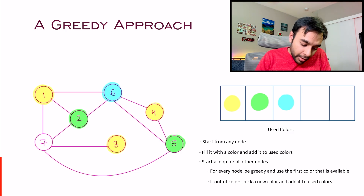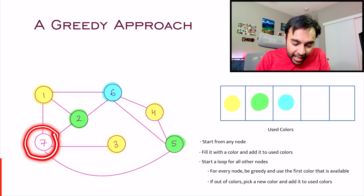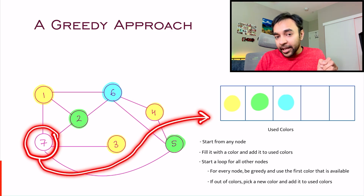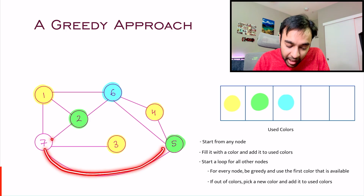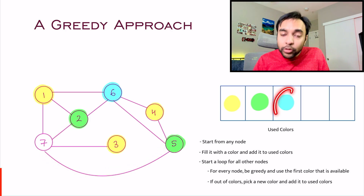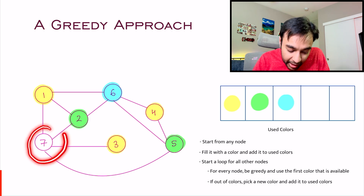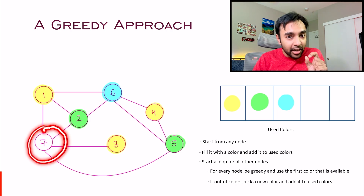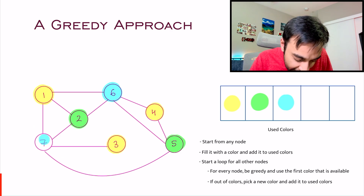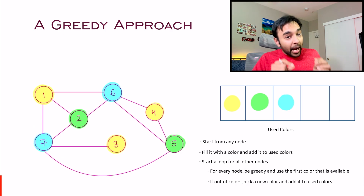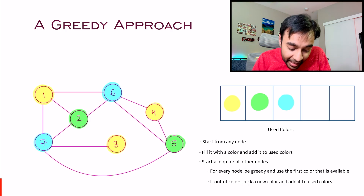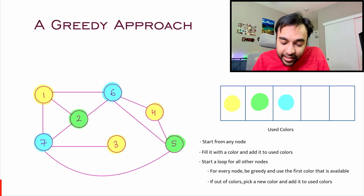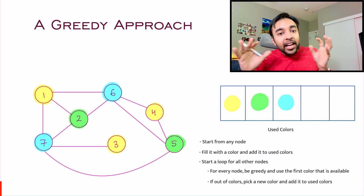We are remaining with one more node — node number 7. Apply the same technique. Can you use yellow? No, because I am already connected to yellow. Can you use green? No, because I am already connected to green. Can you use blue? Yes, because it is not connected to any node which has the color blue. So by applying this greedy approach, I was able to arrive at a solution and I can say that I needed just three colors to color my entire graph.